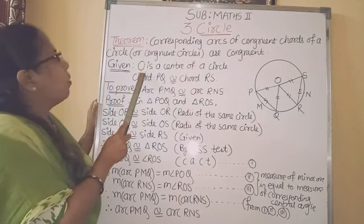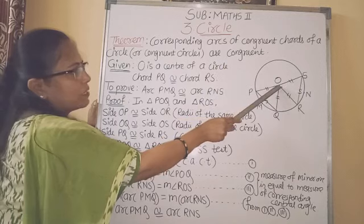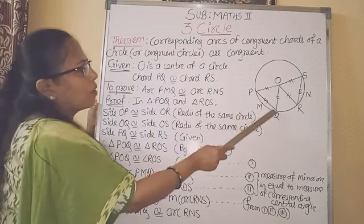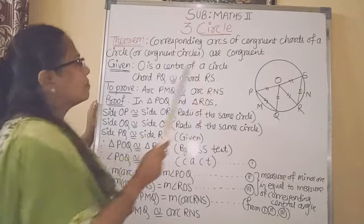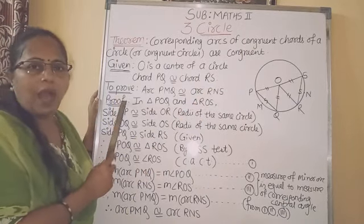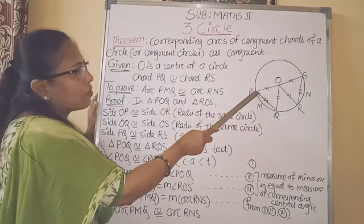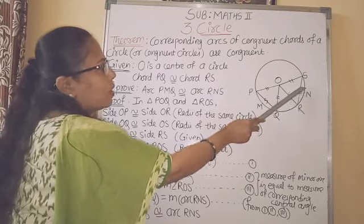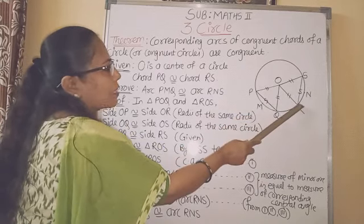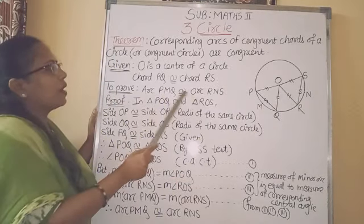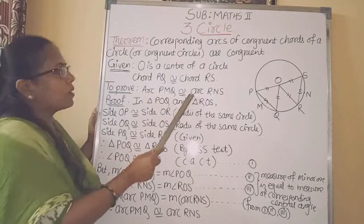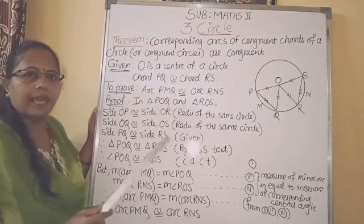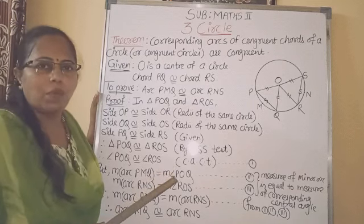We write what is given: O is the center of the circle. Chord PQ is congruent to chord RS. This is given. And what we have to prove: the arc corresponding to chord PQ is arc PMQ, and arc corresponding to chord RS is arc RNS. So, we have to prove arc PMQ is congruent to arc RNS. The textbook gives the hint using the definition of congruent arcs.